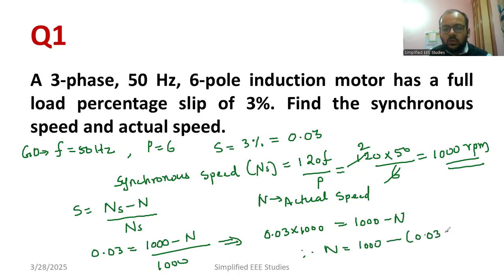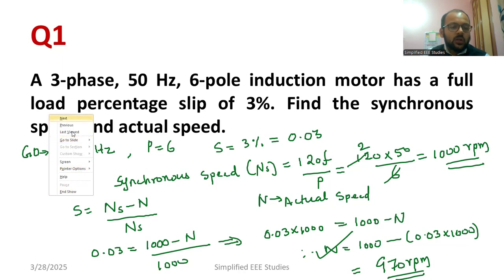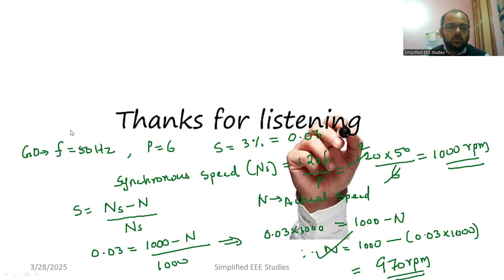Therefore N equals 970 RPM. Remember that there will always be a difference between synchronous speed and actual speed. Ns minus N should always be there. The actual speed is 970 where the synchronous speed is 1000. Now I will move on to another problem.